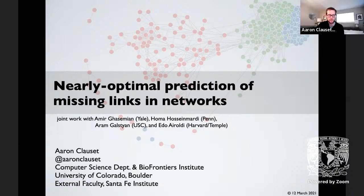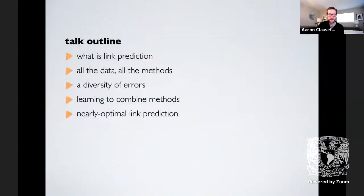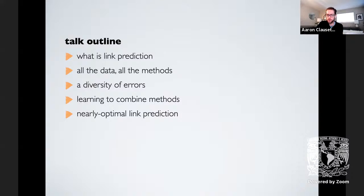Thank you for that introduction. The talk today is 'Nearly Optimal Prediction of Missing Links in Networks,' and I will explain what all of these things mean as we go along. The talk outline is: we'll first talk about what link prediction is, then we'll look at all the data and all the methods, and out of that examination we'll see that there's a diversity of errors that we can use to combine methods in order to produce what we will conjecture to be nearly optimal link prediction.